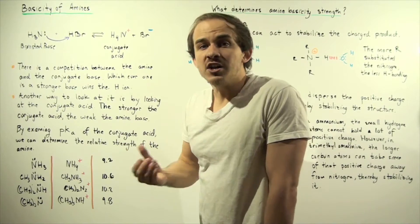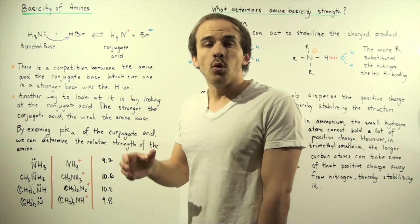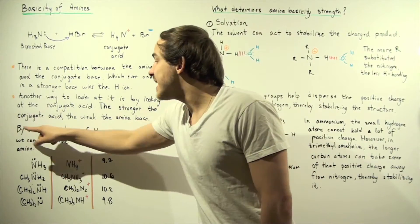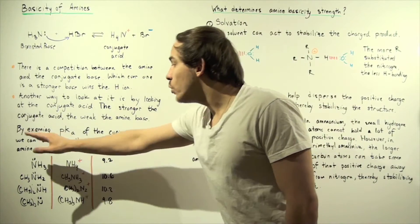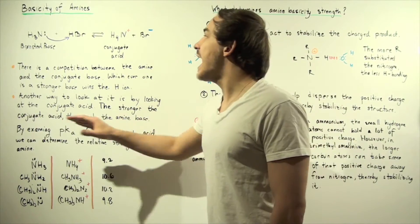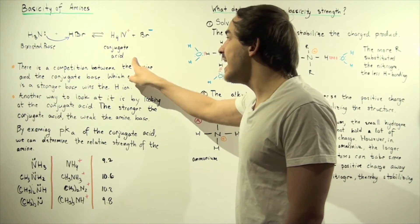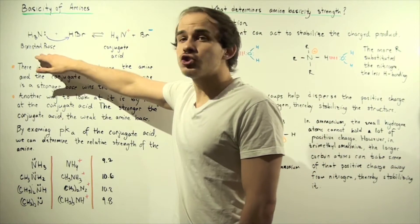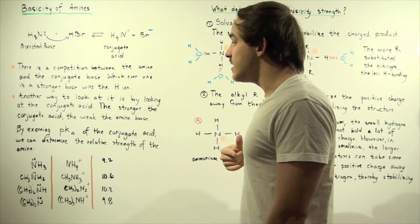One way to determine the strength of the conjugate acid is to look at the pKa. By examining the pKa of the conjugate acid, we can determine the relative strength of the amine. If the conjugate acid has a high pKa, that means it is a weak acid, so the amine is a strong base. Likewise, the opposite is true.